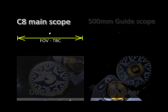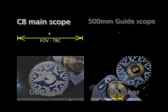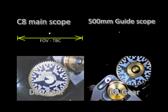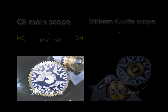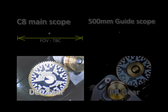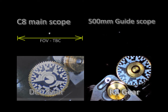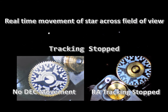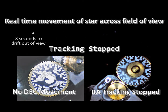The object in the primary and in the guide view — top left and top right respectively — is the same star, SAO110665. The guide scope focal length is approximately one quarter of that of the focal length of the C8.